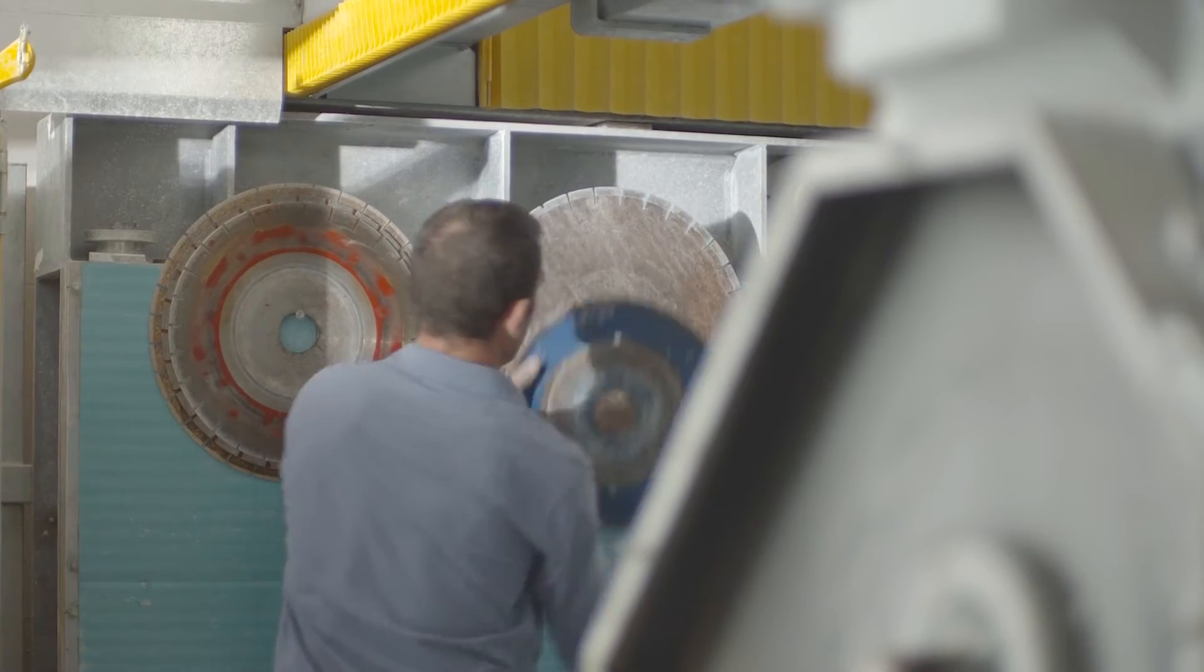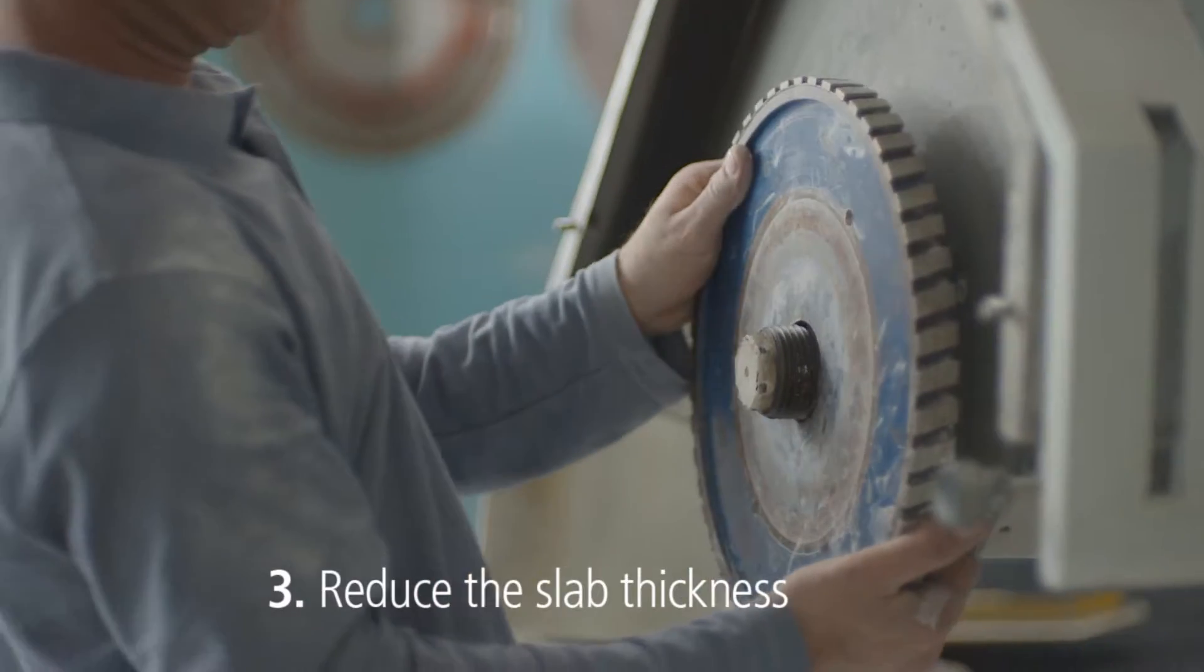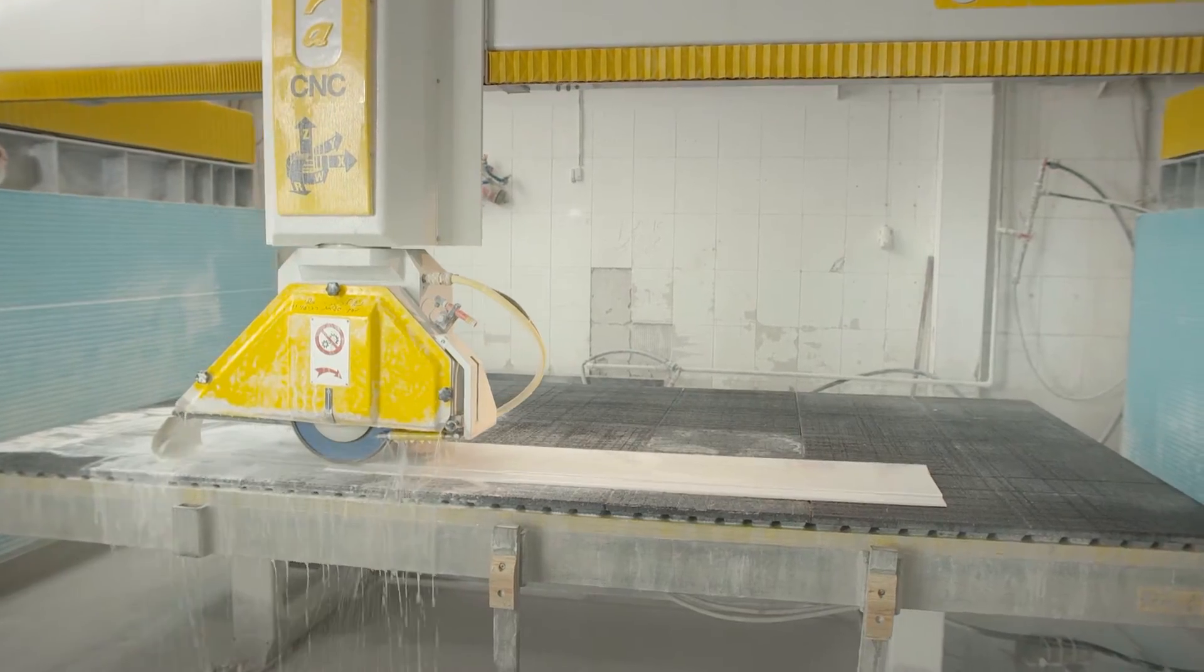Once you have the correct dimensions, reduce the slab thickness of the two long pieces that will be thermoformed to five millimeters.